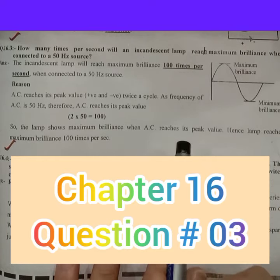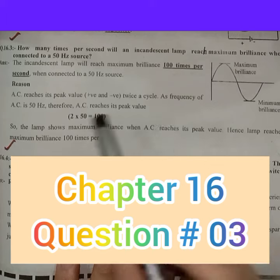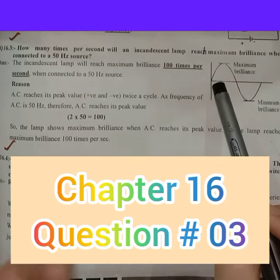The lamp yields maximum brilliance when AC reaches its maximum value. Hence, the lamp reaches maximum brilliance 100 times per second.